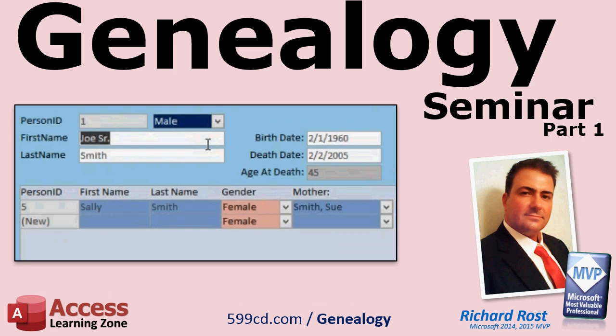You will see how to store dates of birth and death and have the database automatically calculate age. If the person is still alive, you will get their current age. If they are deceased, you will get their age at death. You will also see how to colorize the gender combo boxes accordingly.